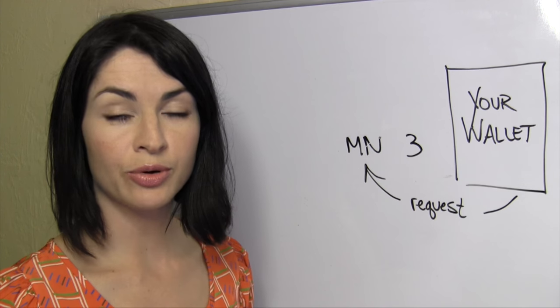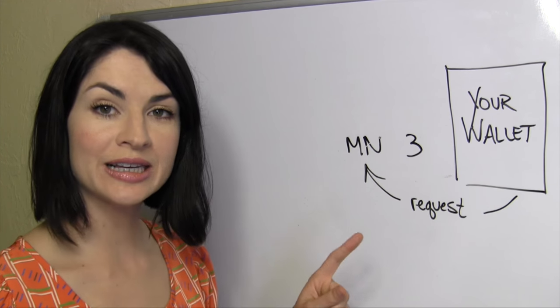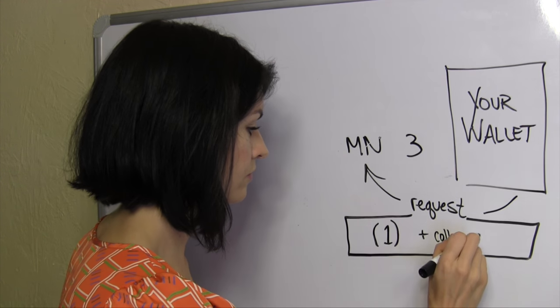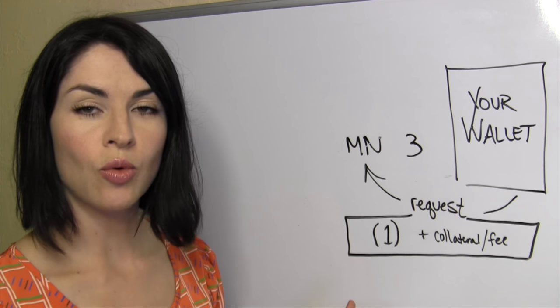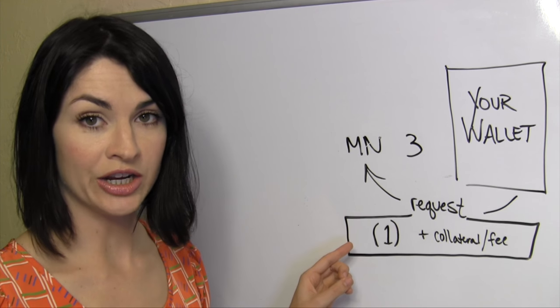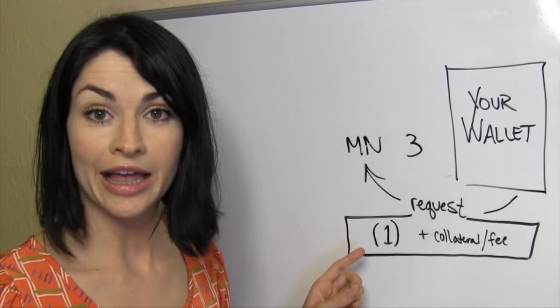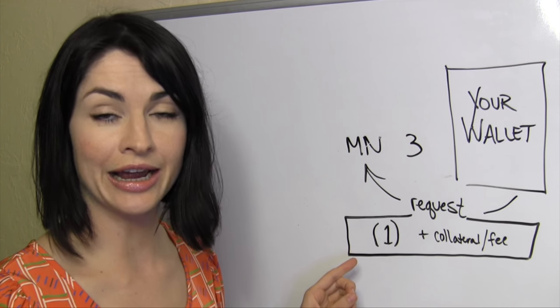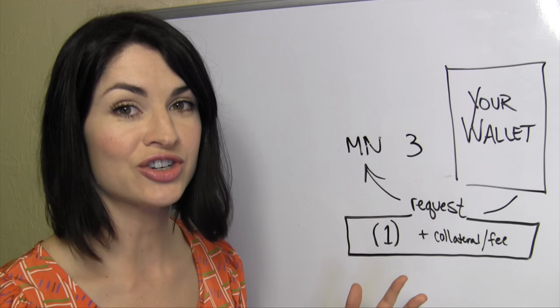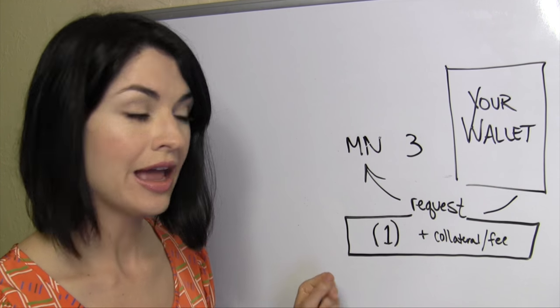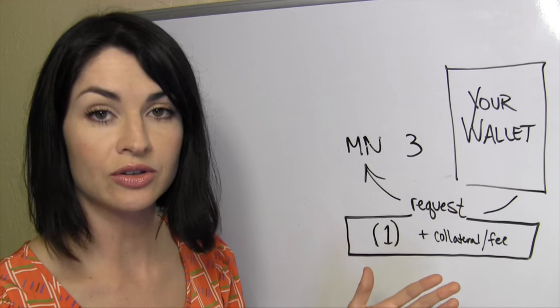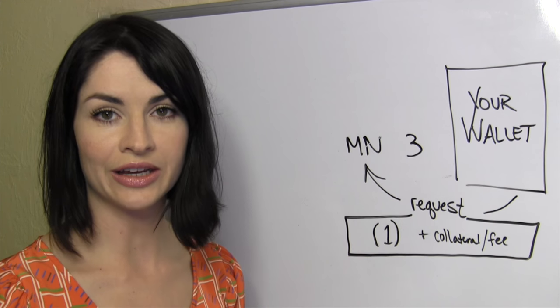At this point, your wallet sends a mixing request to the masternode it selected. In this request, your wallet states the denomination or denominations it would like to have mixed. Granted, it doesn't send the private key to this Dash, just states how much Dash it would like to mix, as well as including a small piece of collateral slash fee. More on that later.